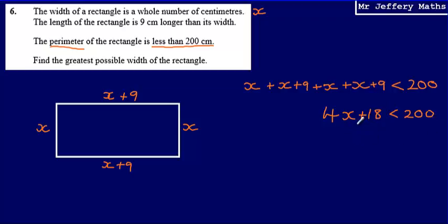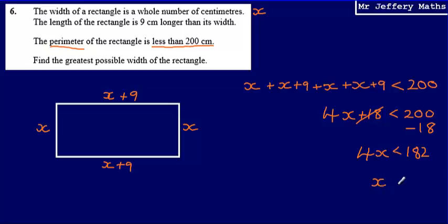Solving this by subtracting 18 from both sides, I can say that 4x will be less than 200 subtract 18. 200 subtract 18 gives me 182. Then to figure out what x is less than, I need to undo multiply by 4, so I divide by 4. That gives me 182 divided by 4, which is 45.5.